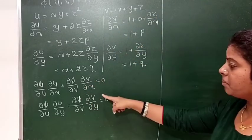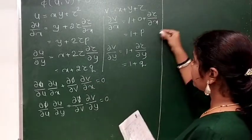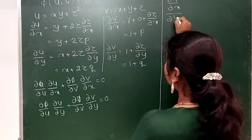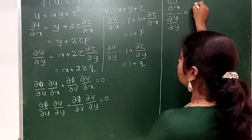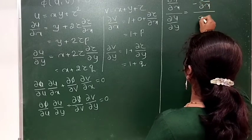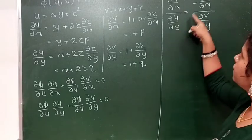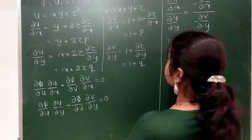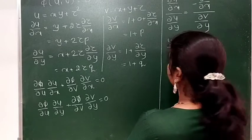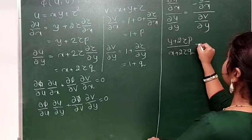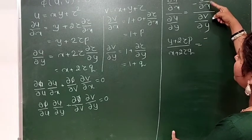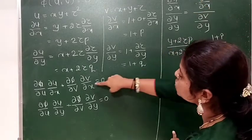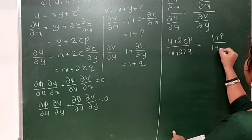Taking the RHS of this part and making the divide as in the previous example, we get: ∂u/∂x divided by ∂u/∂y equals minus ∂v/∂x divided by ∂v/∂y. We now substitute all values obtained from the partial derivatives of u and v with respect to x and y: (y plus 2z times p) divided by (x plus 2z times q) equals minus (1 plus p) divided by (1 plus q).